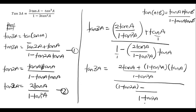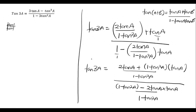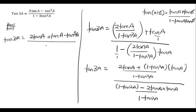The LCM over here goes here: 1 times this gives 2 tan a multiplied by tan a again, which is tan squared a. So let's further simplify. Tan 3a equals — at the top: 2 tan a, plus, if we expand the bracket, we get tan a minus tan cube a, all divided by 1 minus tan squared a. Then the bigger division sign, with the denominator: 1 minus tan squared a minus 2 tan squared a.